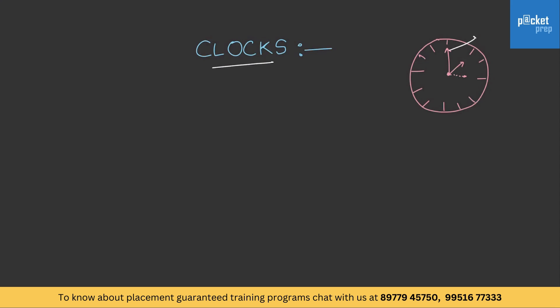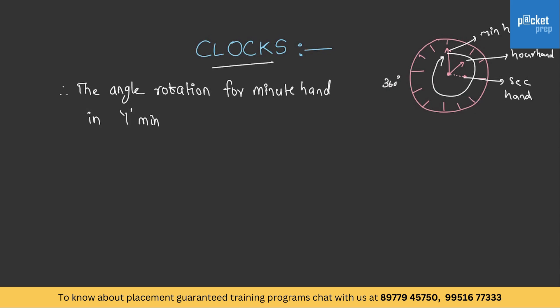Basically, a clock consists of a minute hand, hour hand, and a seconds hand. The minute hand rotates 360 degrees in 1 hour, and the hour hand in 12 hours. Therefore, the angle of rotation for the minute hand in 1 minute is 360 divided by 60, that is 6 degrees.